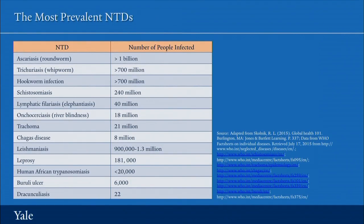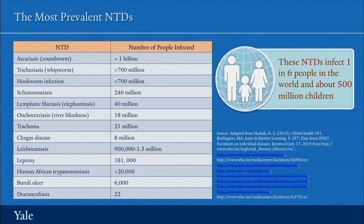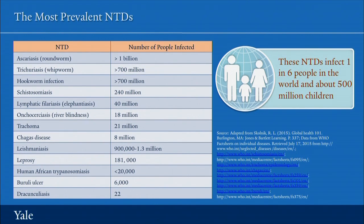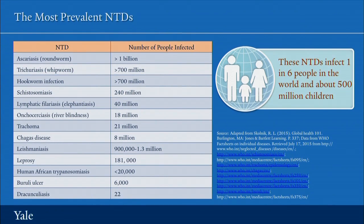Now let's look at the burden of some of the most prevalent of the neglected tropical diseases. More than one billion people — and probably about 500 million young people — are infected with one or more of the neglected tropical diseases. Roundworm alone infects about a billion people. Some of the other soil-transmitted helminths infect around 700 million people. And even lymphatic filariasis, or elephantiasis, affects somewhere around 40 million people worldwide.